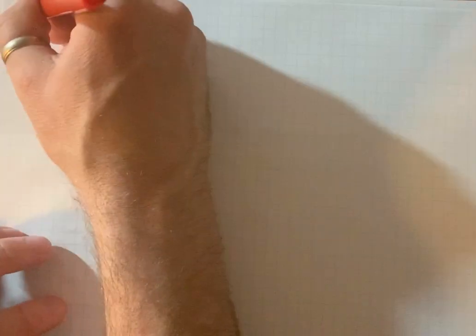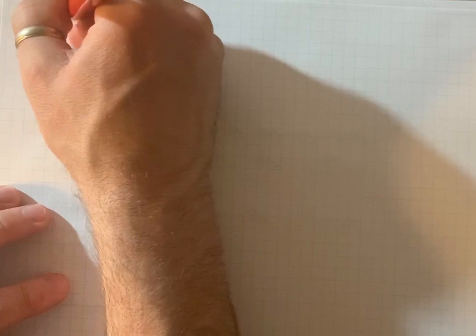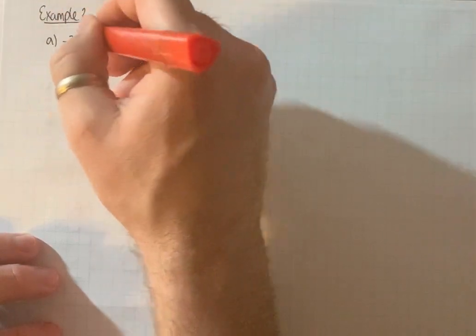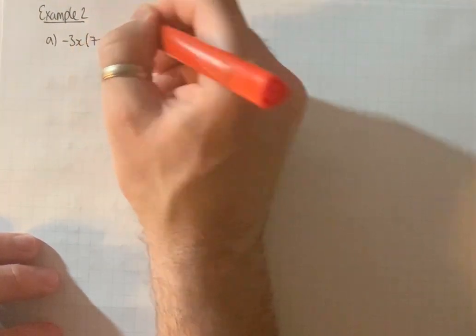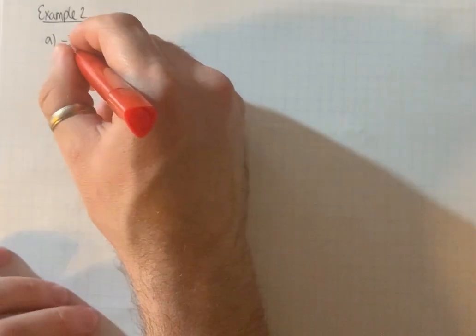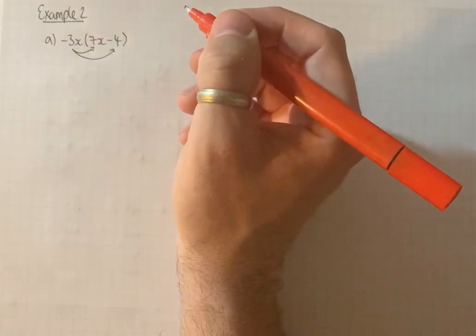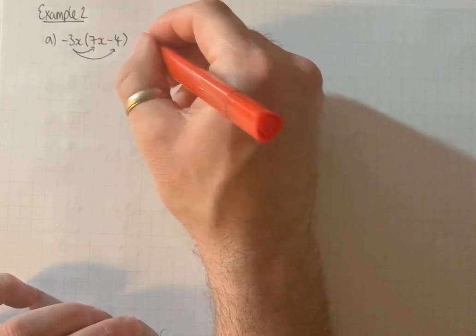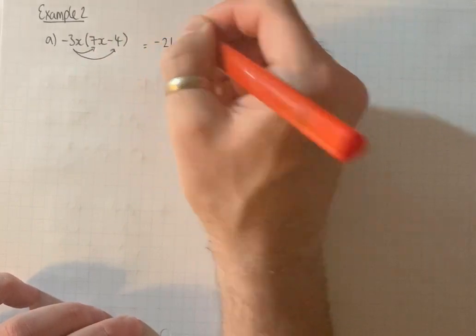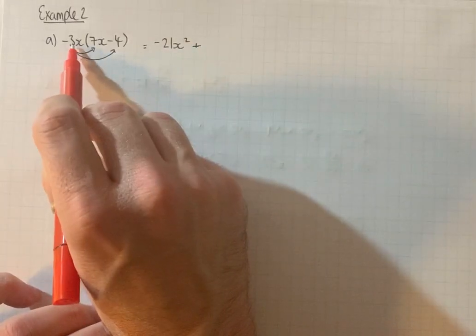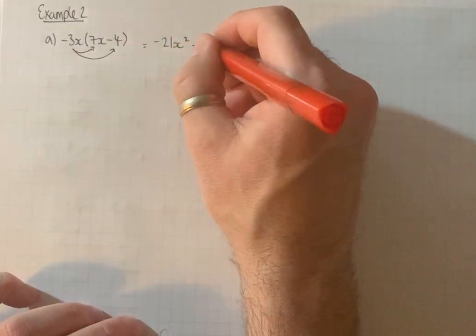So onto example 2. Just expanding some brackets. Minus 3x multiplied by 7x plus 4. Use the method you like here. But in essence we've got to do minus 3x times 7x and minus 3x times minus 4. So minus 3x times 7x is minus 21x squared. Minus times a minus is a plus. And then 3x times 4 is 12x.